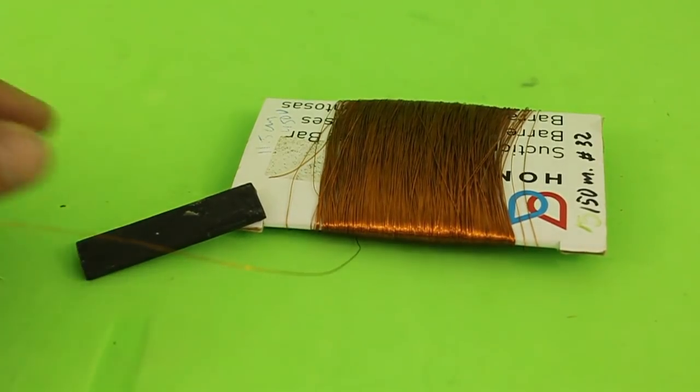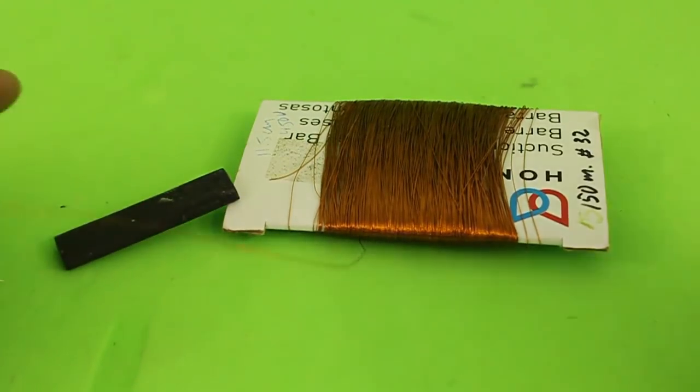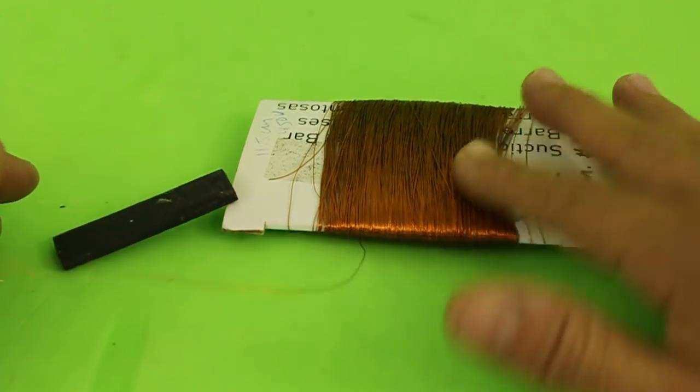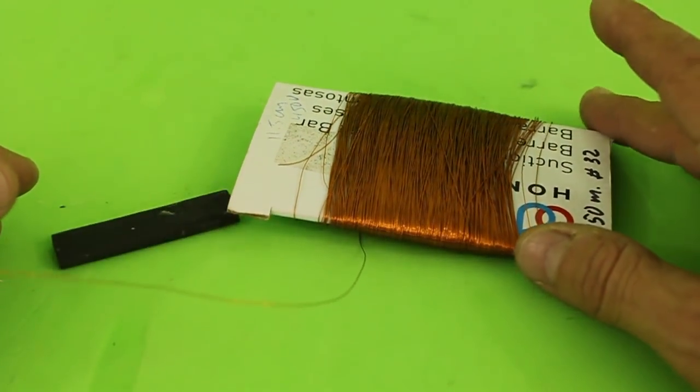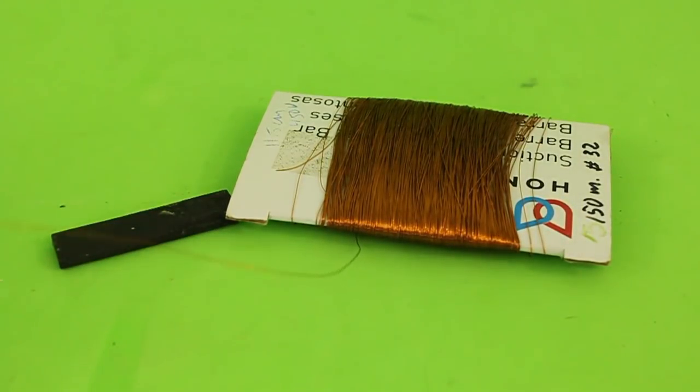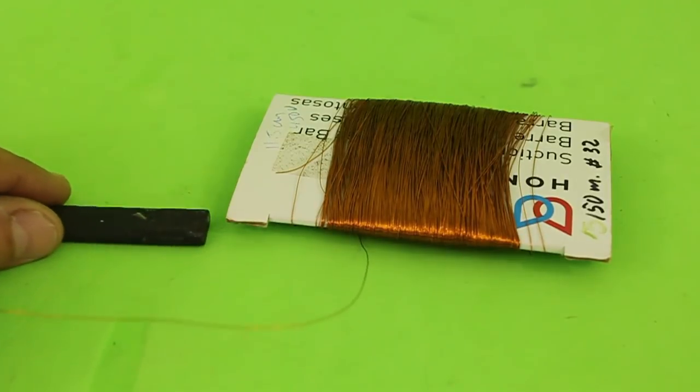On the ferrite core wind 500 turns with magnet wire size 32 AWG. These 500 turns will be the secondary of our transformer.